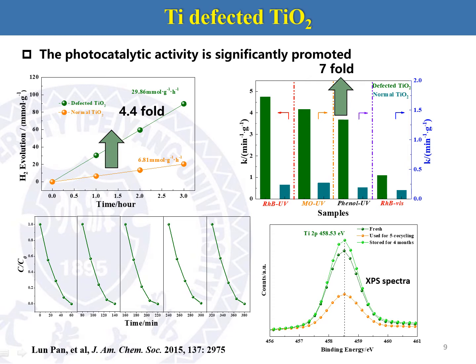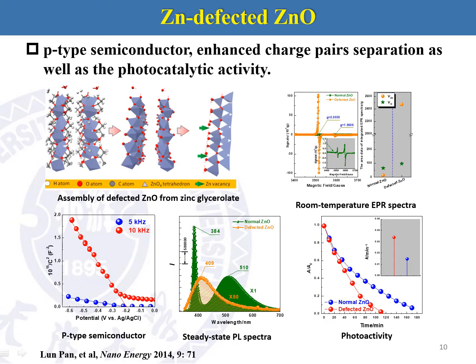The defected TiO2 shows much higher photoactivity in hydrogen evolution and photodegradation. In photocatalytic hydrogen evolution, the defected TiO2 shows a 4.4-fold increased activity compared to normal TiO2. This sample also shows high stability and photostability — even stored at room temperature for 2 years, it maintains its original photoactivity. This method can also be used to produce other metal-defected metal oxides, like zinc oxide.